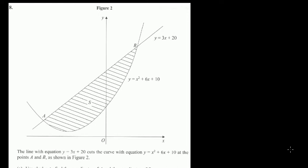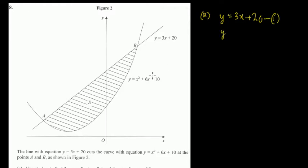In question number eight, we have a curve and we have to find the point of intersection between two curves. In question number a, we have equation 1: y equals 3x plus 20, and equation 2: x squared plus 6x plus 10.